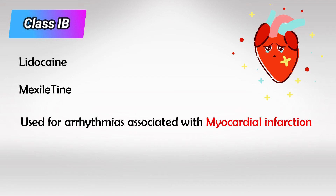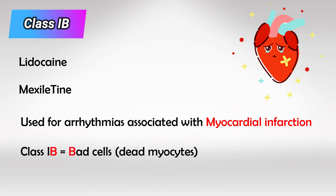So class 1b is used for patients who have recently had MIs. Remember class 1b for bad cells.